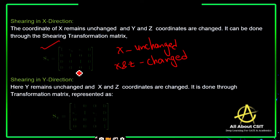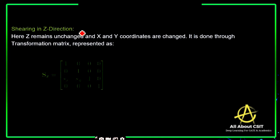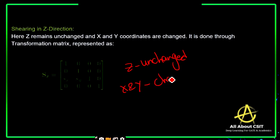The matrix for shearing in the x direction is used to perform the transformation. For shearing in the y direction, if you want to tilt the object to the y direction, y remains unchanged and x and z are changed — this is done through the matrix representation. For shearing in the z direction, z remains unchanged, and x and y coordinates are changed, done through the transformation matrix.